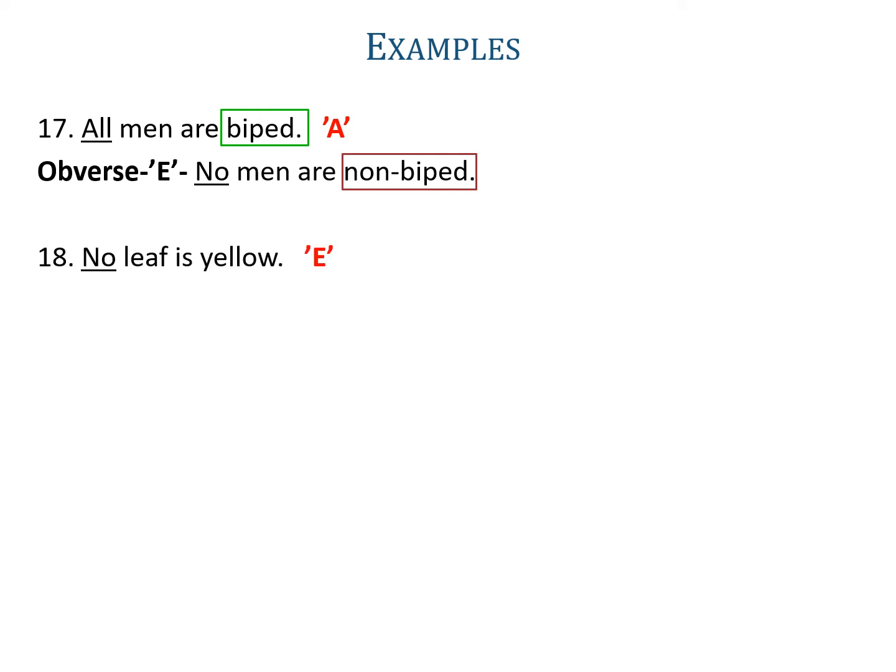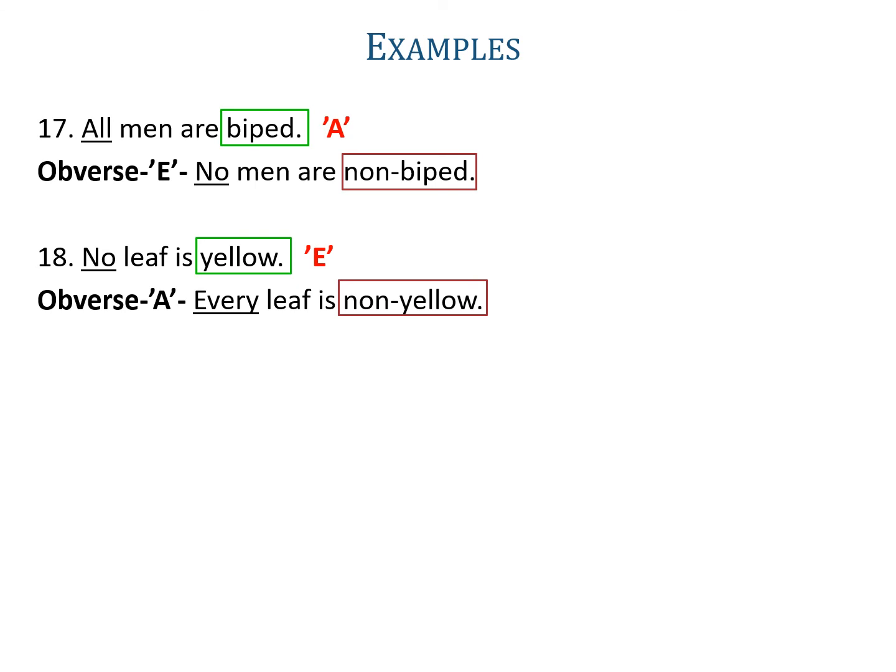Example eighteen: 'No leaf is yellow.' No is used, so it is an E-proposition. The obverse is A, and it should be in a singular term since the given proposition is in singular term — so it will be any or every. The predicate is yellow, the complementary of yellow is non-yellow. So the obverse is 'every leaf is non-yellow'.